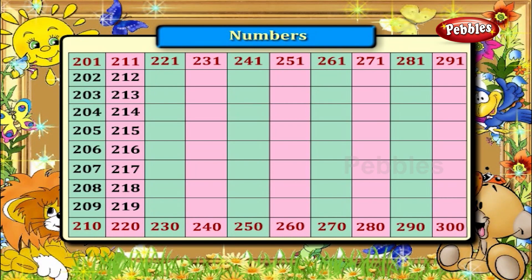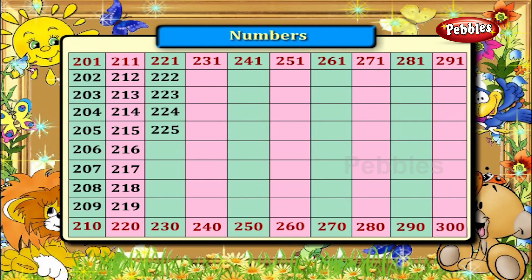Now let us find the numbers between 221 and 230. They are 222, 223, 224, 225, 226, 227, 228 and 229.